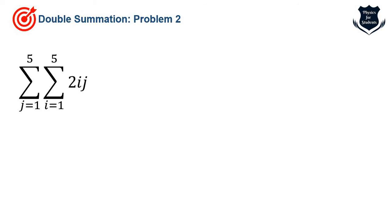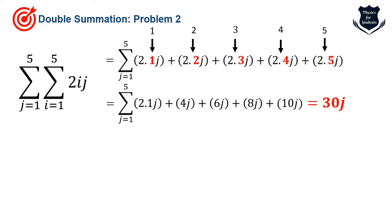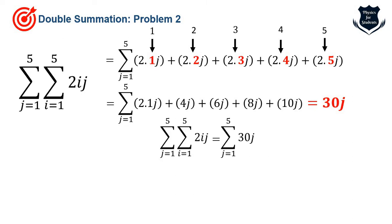The second example: sigma j=1 to 5 of sigma i=1 to 5 of (2ij). We take the innermost sum i=1 to 5 first, keeping the outer sigma j=1 to 5 constant. I is varying from 1, 2, 3, 4, 5 as shown by the black down arrow. Solving this innermost sum gives 30j.